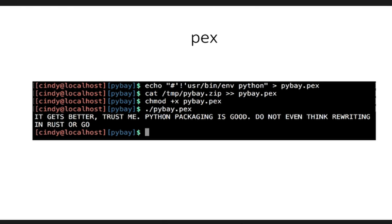In this case, let's create a file called pybay.pex, taking our zip file and copying it over, then converting that file to an executable — either by dropping in the shebang line at the beginning or by using chmod. Now if you look, you're executing python.pex without even invoking the python command, and you're seeing the Python file being executed with output. Pex actually builds on top of all these things — pex files are just executable Python files.